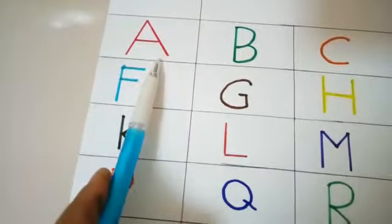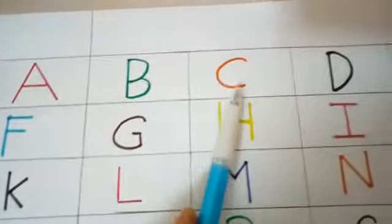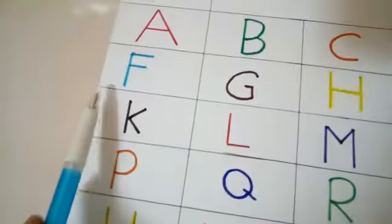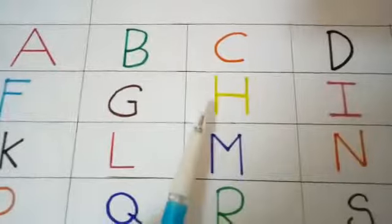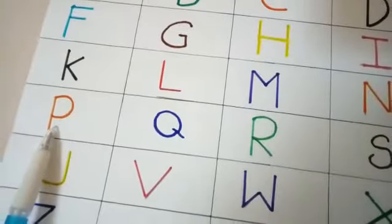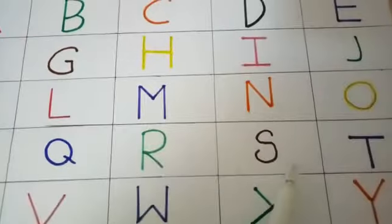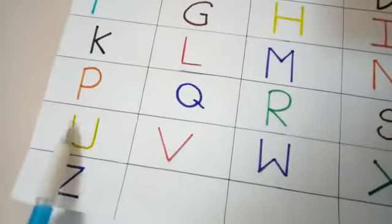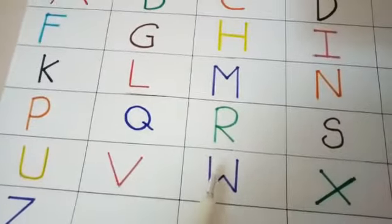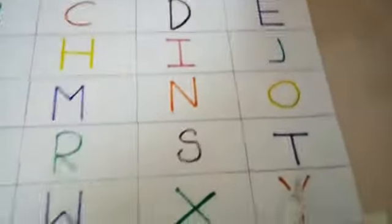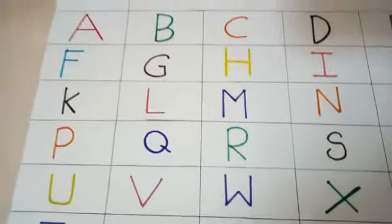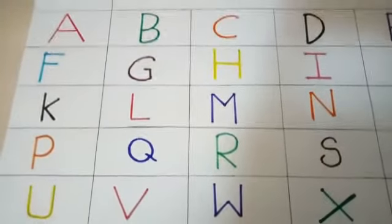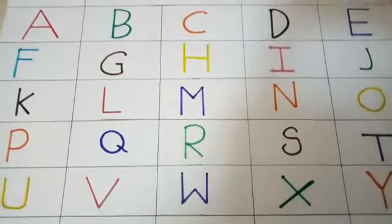A, B, C, D, E, F, G, H, I, J, K, L, M, N, O, P, Q, R, S, T, U, V, W, X, Y, and Z. Now I know my ABCs. Next time won't you sing with me?